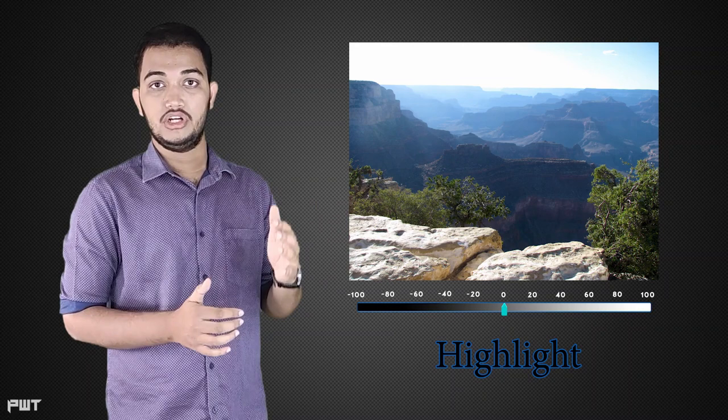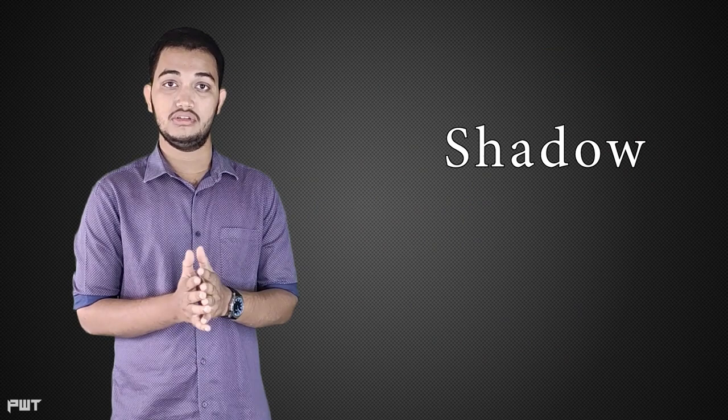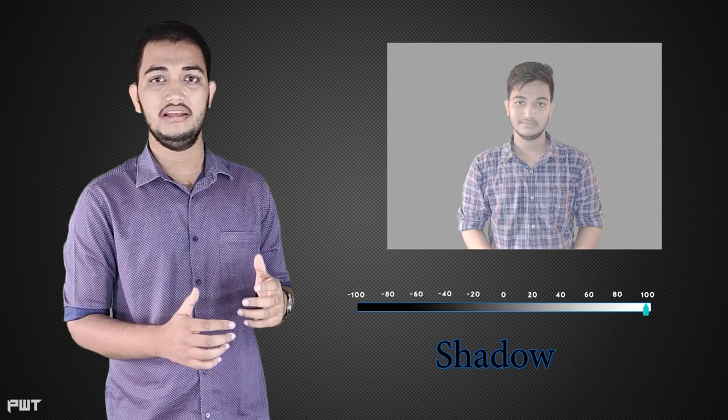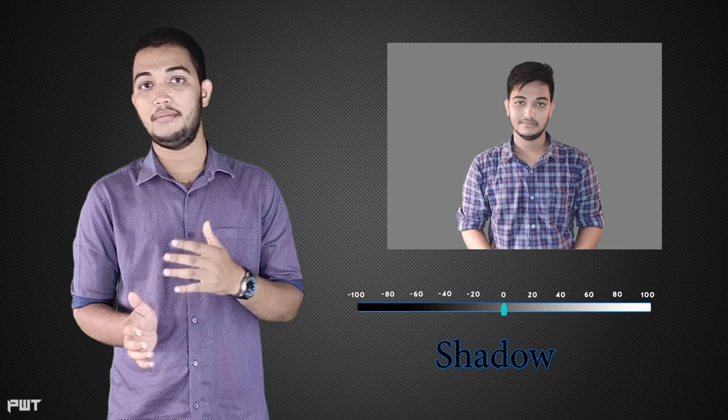Now let's talk about shadow. Shadow works on the dark pixels — it makes the dark areas darker. When you edit a photo and add shadow, the dark areas become more dark. For example, when you add shadow your hair, which is dark, will become more prominent. When you add shadow, whatever is dark will glow less. Shadow and highlight together are basically the components of contrast.